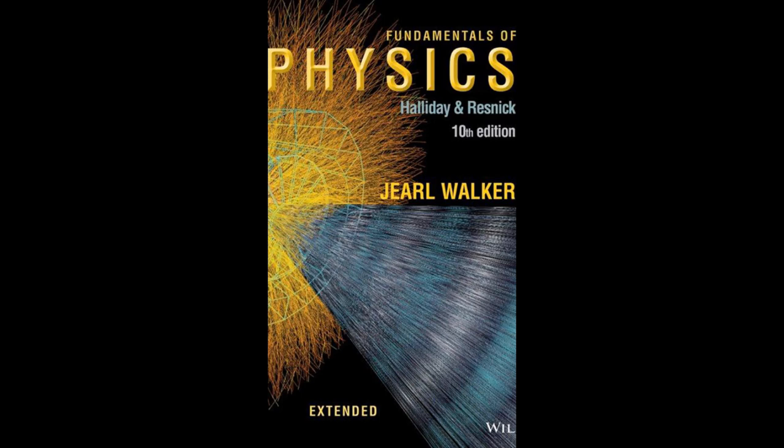Coulomb's Law is a fundamental principle in physics that describes the interaction between electric charges. Proposed by French physicist Charles-Augustin de Coulomb in the 18th century, this law plays a crucial role in understanding the behavior of electrically charged particles. The law states that the force between two point charges is directly proportional to the product of their magnitudes and inversely proportional to the square of the distance between them — the greater the charges, the stronger the force, and the farther apart they are, the weaker the force. Similar charges repel each other, while opposite charges attract. The force is attractive when one charge is positive and the other negative, and repulsive when both charges have the same sign, weakening rapidly as the charges move away from each other.